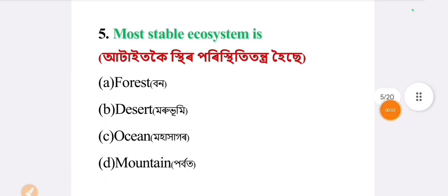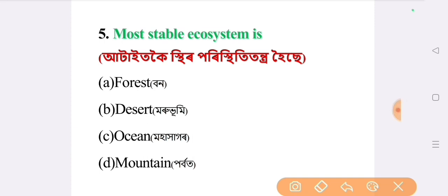Next question: the most stable ecosystem is. The answer is option C: ocean.